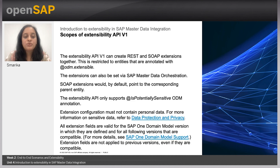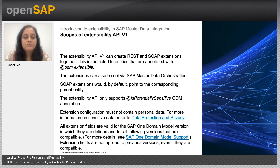Moving to the scopes of extensibility: the extensibility API V1 can create REST and SOAP-based extensions together. This is restricted to entities that are annotated with @ODM.extensible. The extensions can also be set by the SAP Master Data Orchestration UI. SOAP extensions would by default point to the corresponding parent entity.